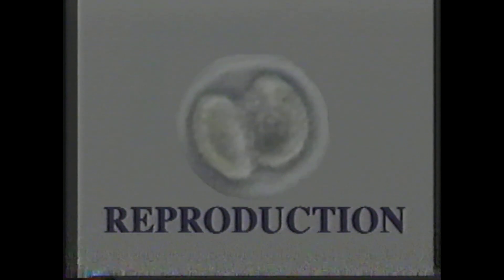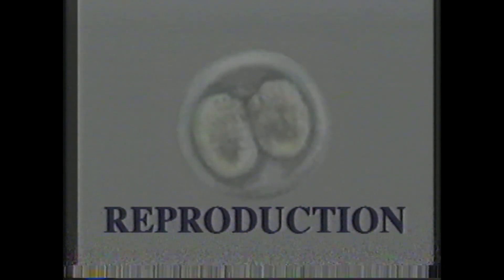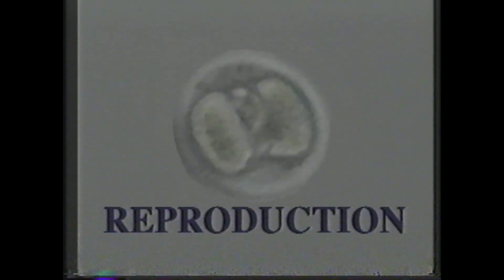Cells are the smallest units that exhibit the three basic characteristics of life. The first characteristic is reproduction. Every life form has the ability to reproduce, and like any parent, cells pass on their characteristics to the next generation.